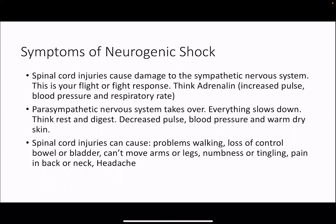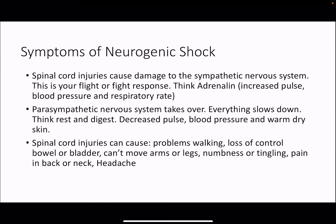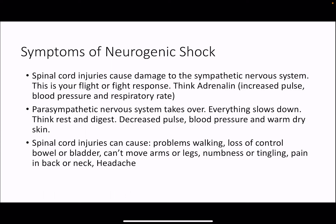Neurogenic shock: spinal cord injuries damage the sympathetic nervous system — your fight-or-flight response, think adrenaline — which normally increases heart rate, blood pressure, and respiratory rate. When the sympathetic nervous system is damaged, the parasympathetic nervous system takes over and everything slows down — think rest and digest. This results in decreased pulse, blood pressure, and warm, dry skin. That's the only type of shock where the skin isn't blue, cold, and clammy. Spinal cord injuries can also cause problems walking, loss of bowel or bladder control, inability to move arms or legs, numbness and tingling, and pain in the back, head, or neck.